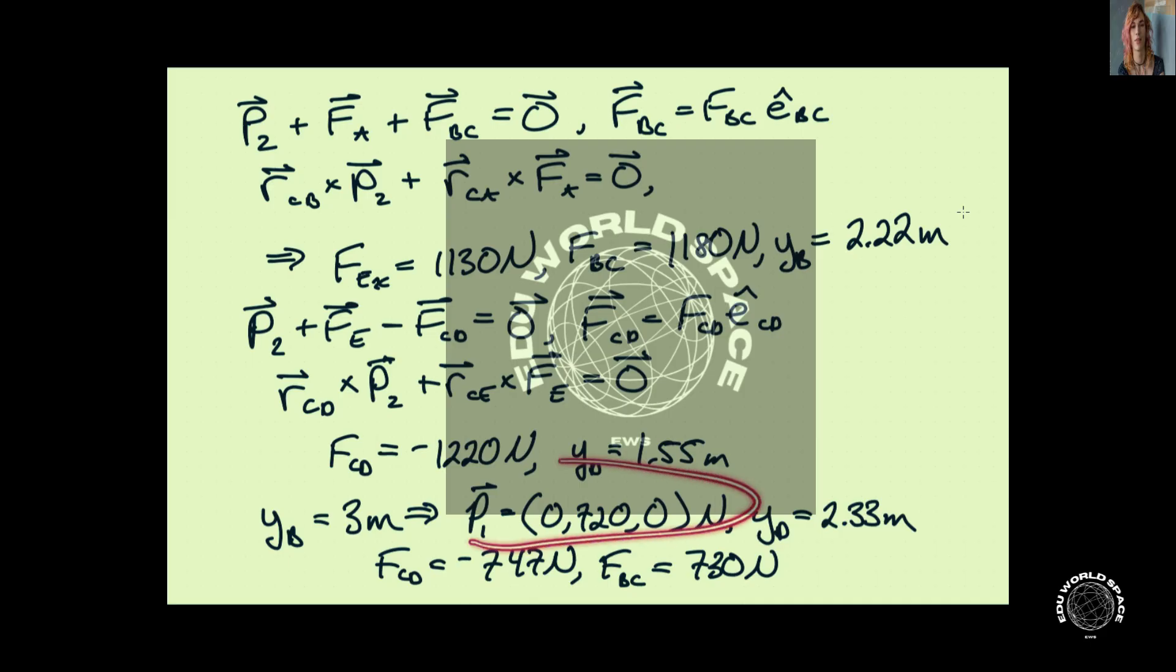So now, if we plug in YB as three meters, we'll find that P1 is 720 Newtons in the negative Y direction. And then also, that YD is 2.33 meters now. So we can see that it's sagged quite a bit more. Now, the loads in the interior cables are now 747 Newtons in the cable from C to D and 730 Newtons in the cable from B to C.